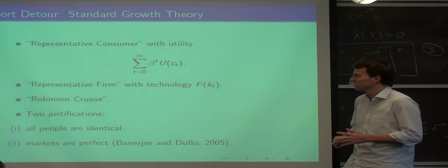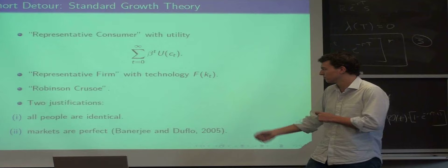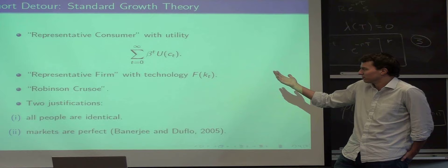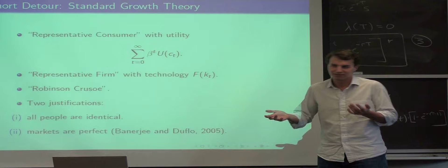The short detour I want to make is standard growth theory, which I've kind of already hinted to, and I want to say why GDP doesn't work very well. Robinson Crusoe is the representative consumer and the representative firm in one. So he's the guy and he owns production technology. Obviously, this is not a realistic representation of the economy because there's not just one Robinson Crusoe, there's a bunch of guys. How do you justify this?